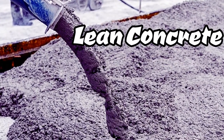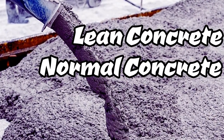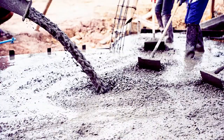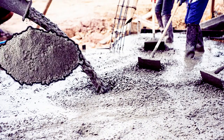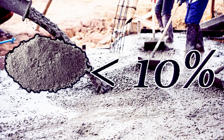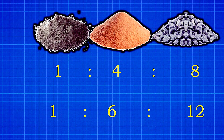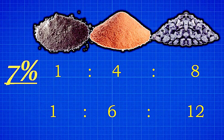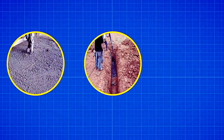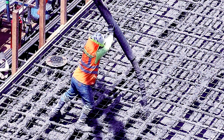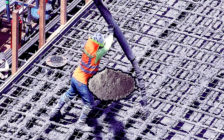Definition of lean concrete, normal concrete, and rich concrete. If the concrete contains cement content less than 10%, it is called lean concrete. For example, concrete mix 1:4:8 and 1:6:12 have cement content of approximately 7% and 5% respectively. Lean concrete is commonly used to even out uneven floor foundations or surfaces of walls.